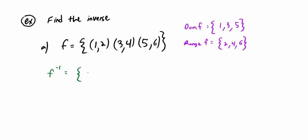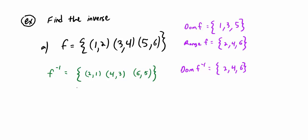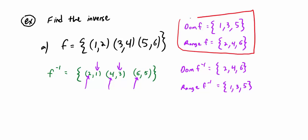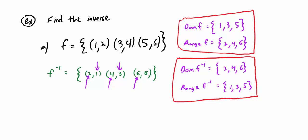So F inverse is: (2, 1), (4, 3), (6, 5) — that's all there is to it. The domain of F inverse is {2, 4, 6} — just look at the inputs, the first coordinates. The range of F inverse is {1, 3, 5} — the second coordinates. This illustrates that the domain and range of F inverse are the flip-flop of the domain and range of F.